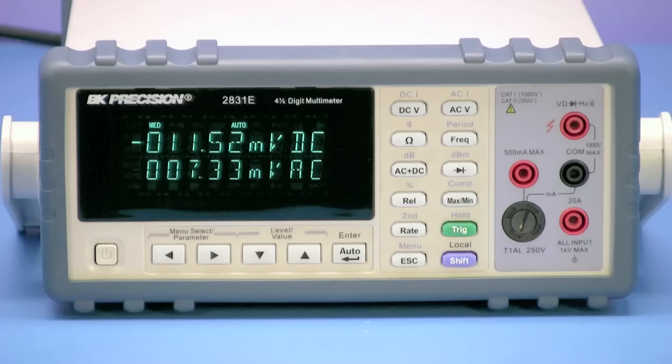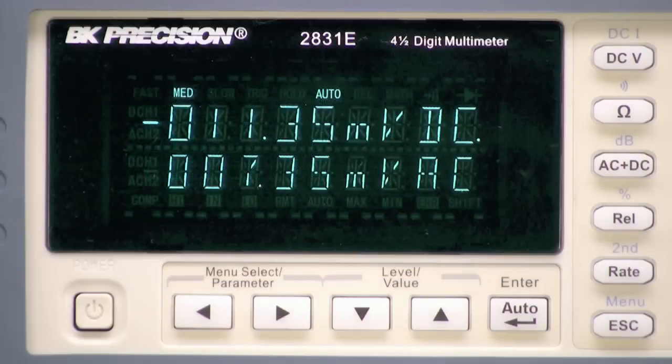Here is the BK Precision Model 2831E, a 4.5 digit True RMS Bench Digital Multimeter.